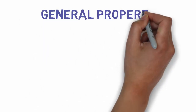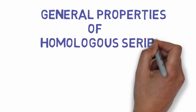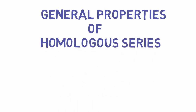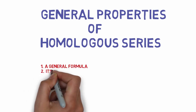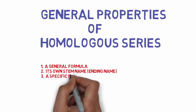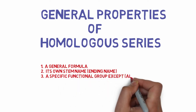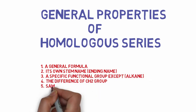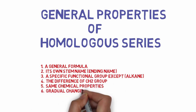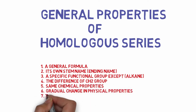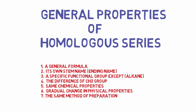The general properties of a homologous series are: all members have a general formula, their own stem name, a specific functional group (except alkanes), consecutive members differ by a CH2 group, they share the same chemical properties, show a gradual change in physical properties, and use the same method of preparation. You can pause the video to memorize all of these properties.